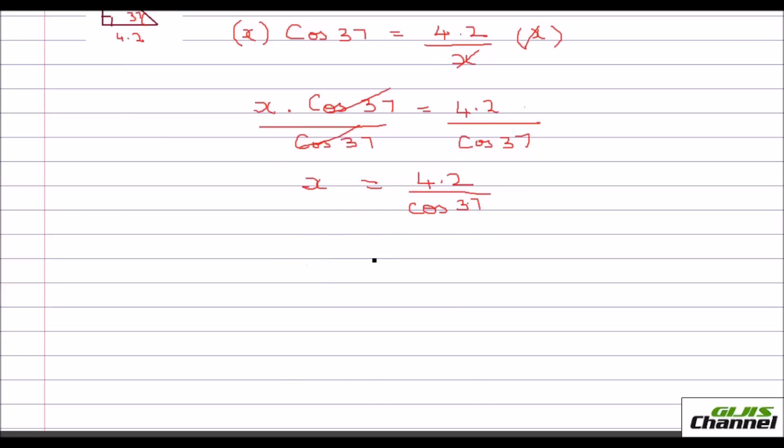So that's nothing but 4.2 over, use your calculator and find cos 37. That is going to be, I've just rounded off to 4 decimal places. And that is 0.7986. Divide that, you get the value for x as 5.2590.